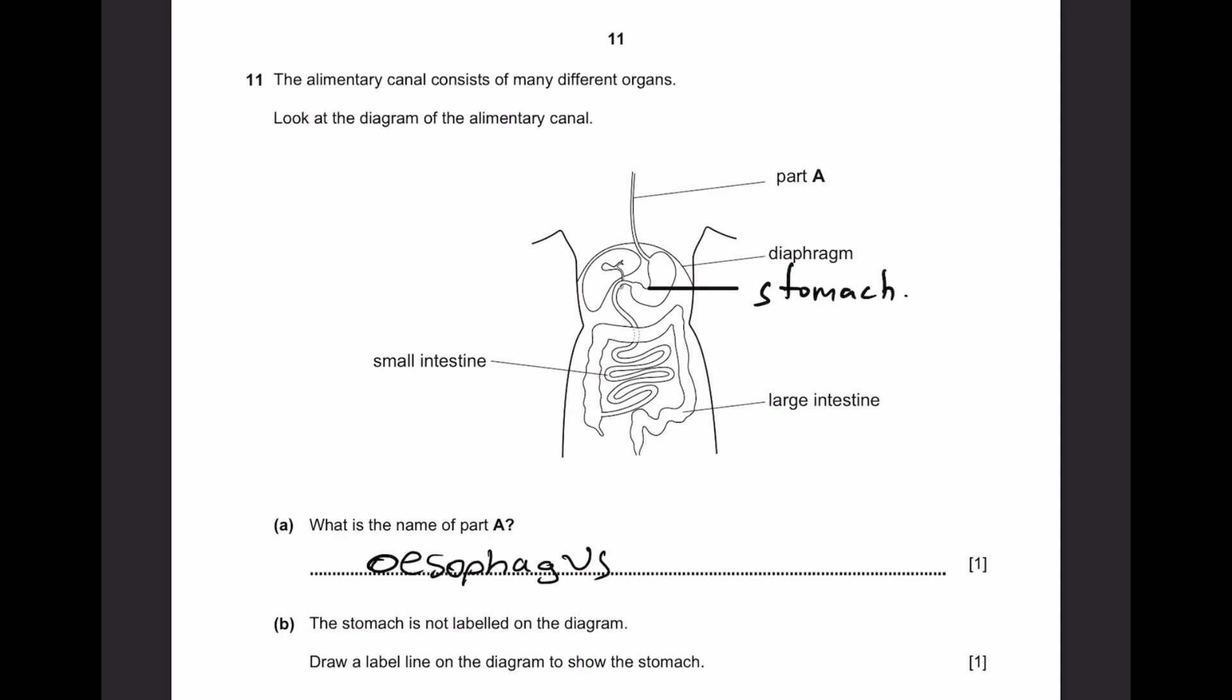Question 11. The alimentary canal consists of many different organs. Look at the diagram. Part A. What's the name of part A? This is the food pipe leading to the stomach, or in other words, esophagus.